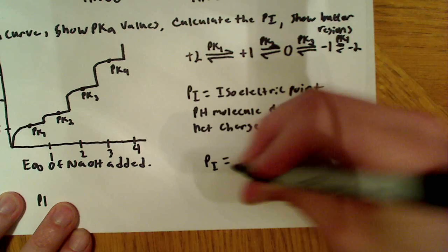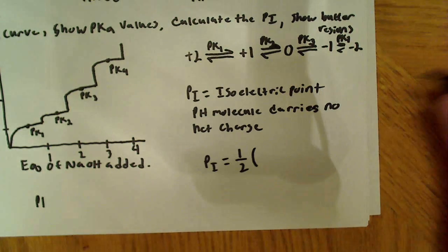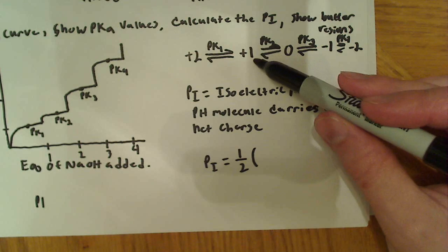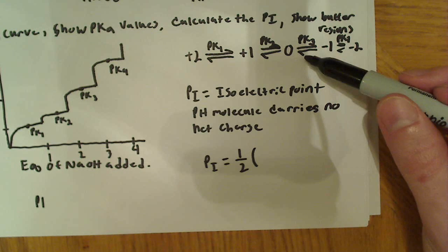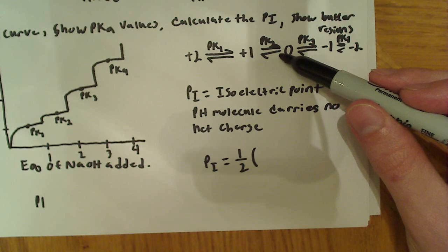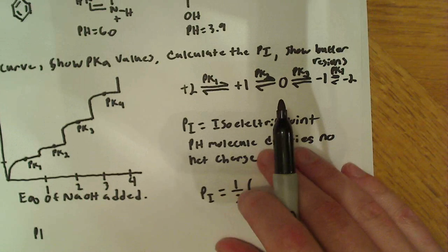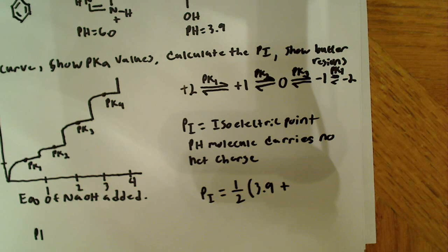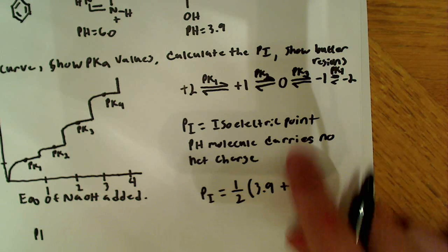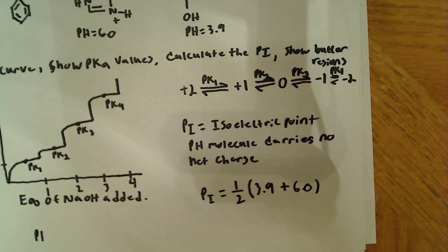And we're going to plug those into the equation for the isoelectric point. So the pI is equal to one-half. And basically it's just one-half times the pKa value where it's plus one and the pKa value where it's minus one, crossing through the zero. So we already said that pK2 is aspartic acid at 3.9 up here. So we're going to plug in 3.9. And we're going to say that's plus the other group, which is pK3. And we said pK3 would be the histidine at 6. So that would be 6.